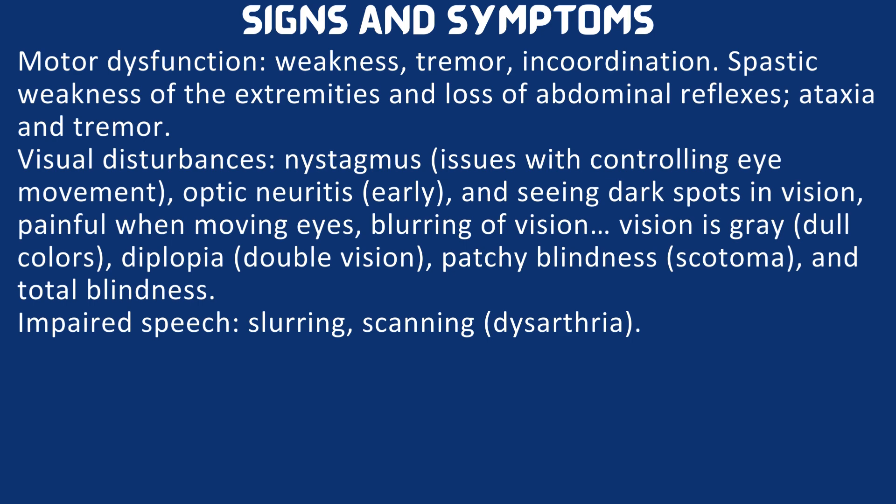Visual disturbances include nystagmus — issues with controlling eye movement — and optic neuritis as an early sign. The patient may see dark spots in their vision and experience pain when moving the eye. Vision may be blurred with grey or dull colors. The patient may have diplopia — double vision — patchy blindness known as scotoma, and sometimes total blindness.